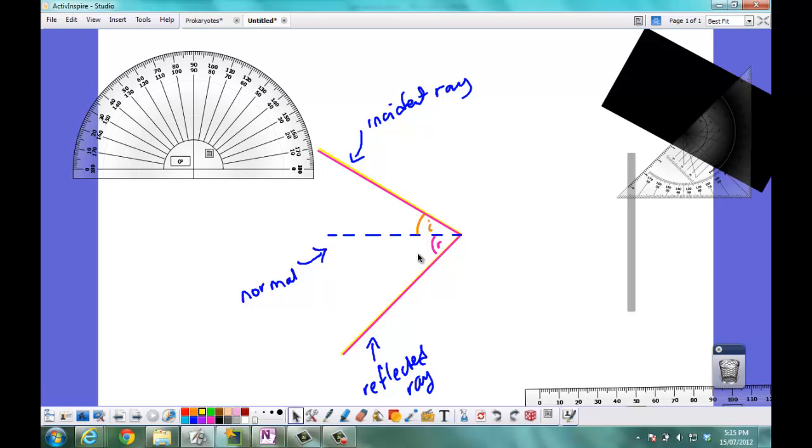So you'll notice that I've added two additional labels. I've now labeled the angle of incidence little i and the angle of reflection little r.